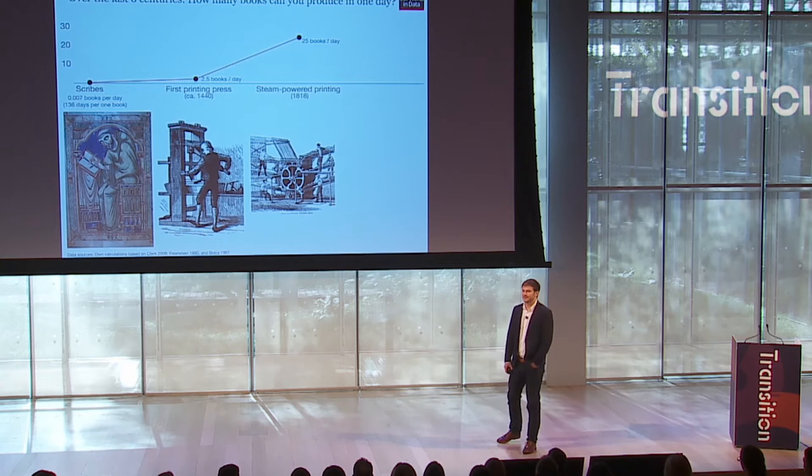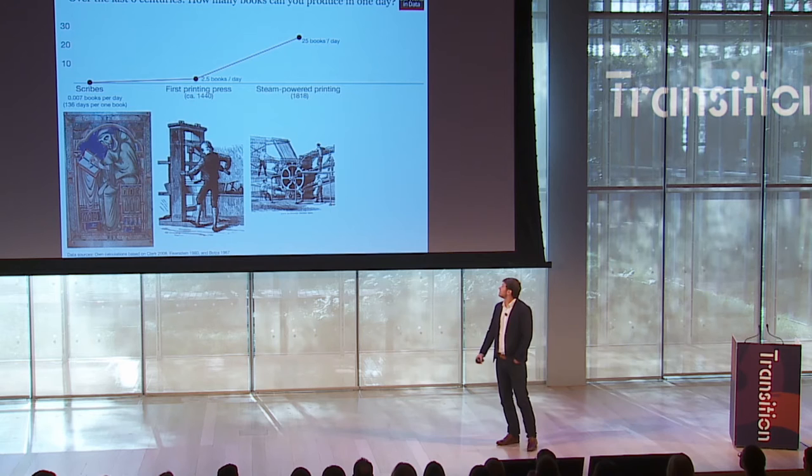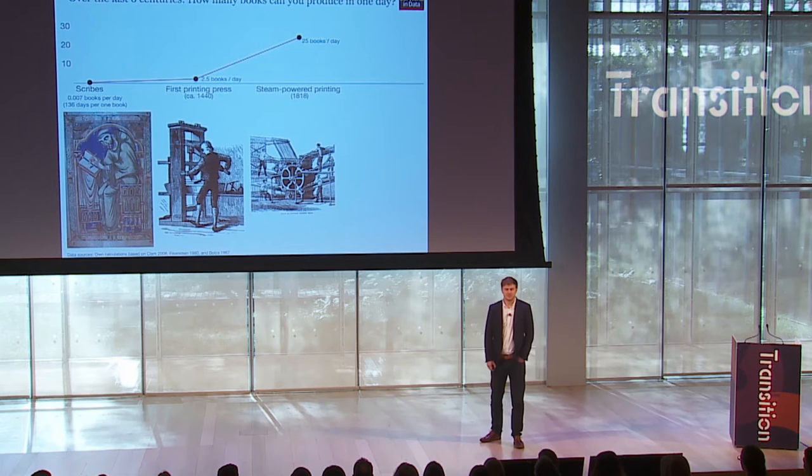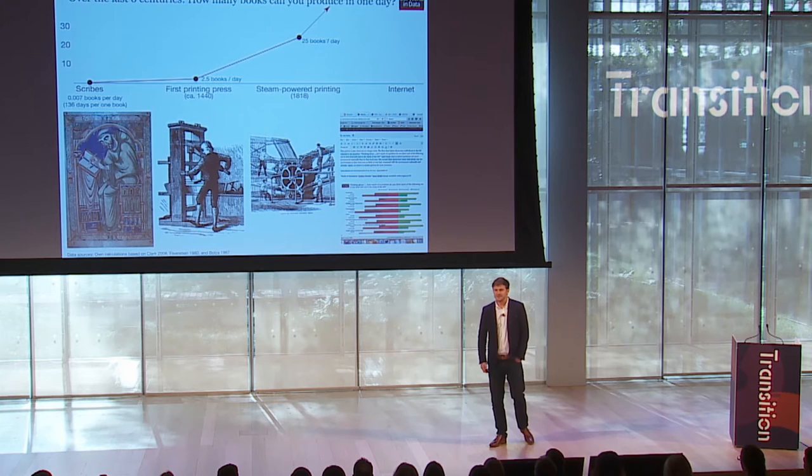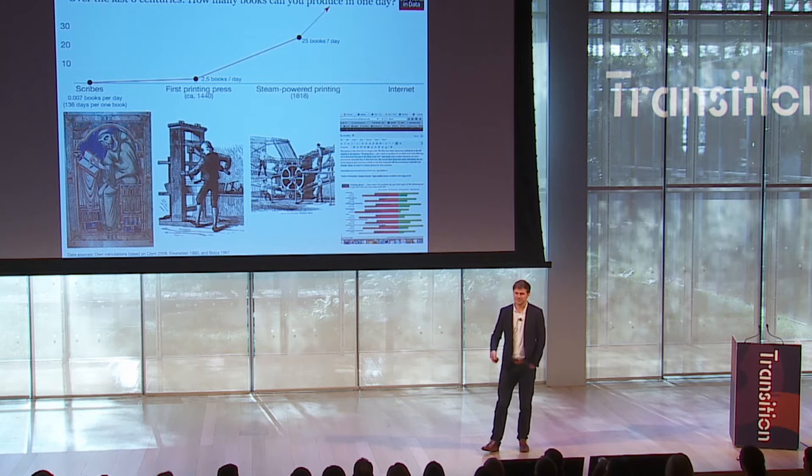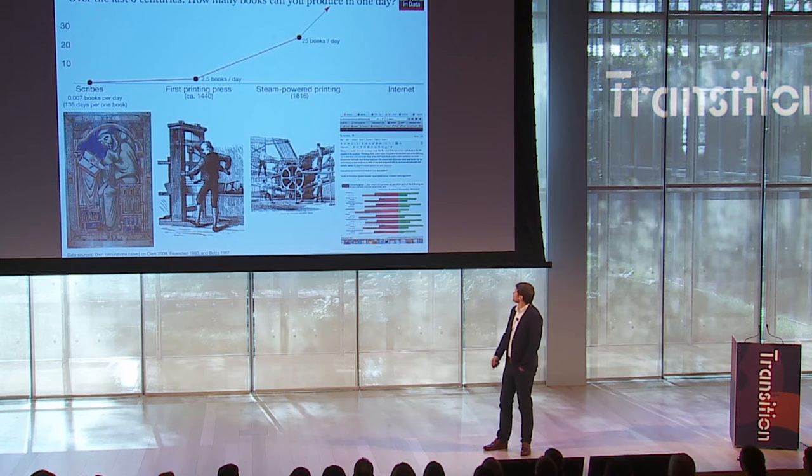Then productivity jumps up again in 1818, when steam-powered printing comes in and you can produce 25 books per day. And if we move to today to finish this long-term perspective, we have the internet, and of course there's basically no limit to how many texts you can copy in a day. You can take the Bible and copy it as often as you want in a day. So productivity is off the charts.